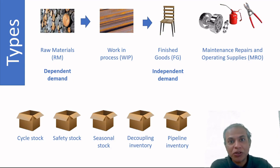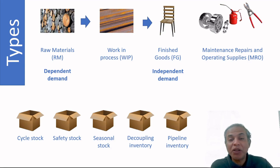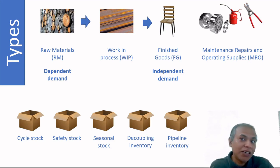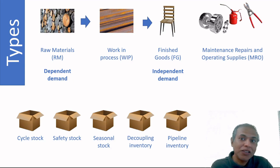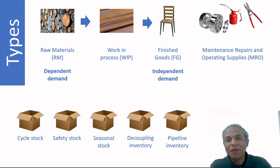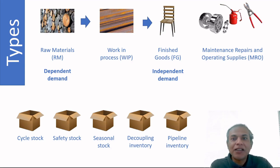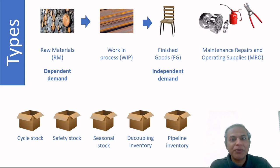Finally, pipeline inventory is anything in transit — on ships, trucks, aircraft, or literally in pipes. Just because inventory is in transit doesn't mean it has no owner or no cost. Either the supplier or the buyer owns it, and there is a cost to the supply chain regardless. This wraps up the definition, purpose, and types of inventory; the next video will cover inventory metrics.